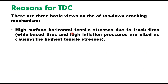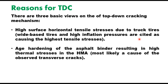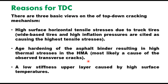There are three basic views on the top-down cracking mechanism. The first is high surface horizontal tensile stress due to truck tires, where wide-base tires and high inflation pressures are cited as causing the highest tensile stresses at the top surface of the layer. The second is age hardening of the asphalt binder resulting in high thermal stresses in the hot mix asphalt, which is also the most likely cause of observed transverse cracks. The third is a low stiffness upper layer caused by high surface temperatures.